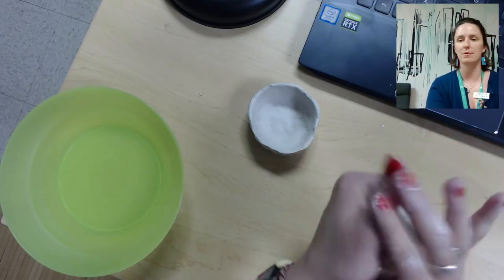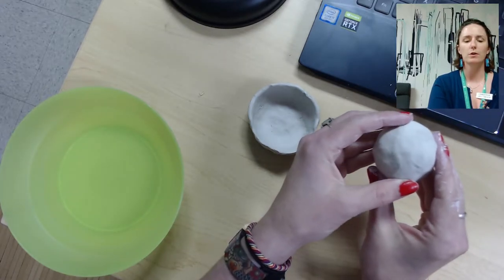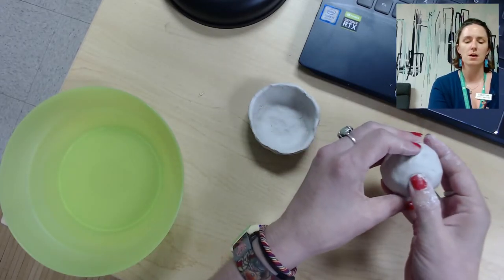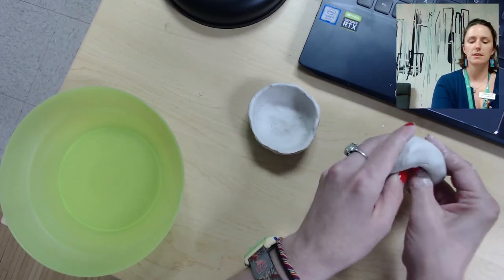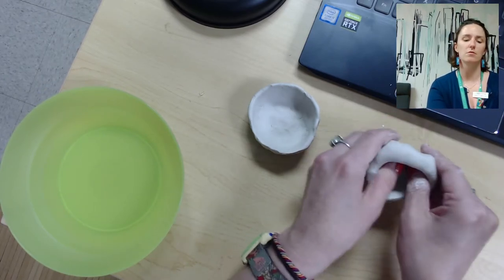Alright, when you are happy with that, you have a nice little ball shape, you are going to press down the center. Just press it in the middle and you're going to shape it into a little pot.